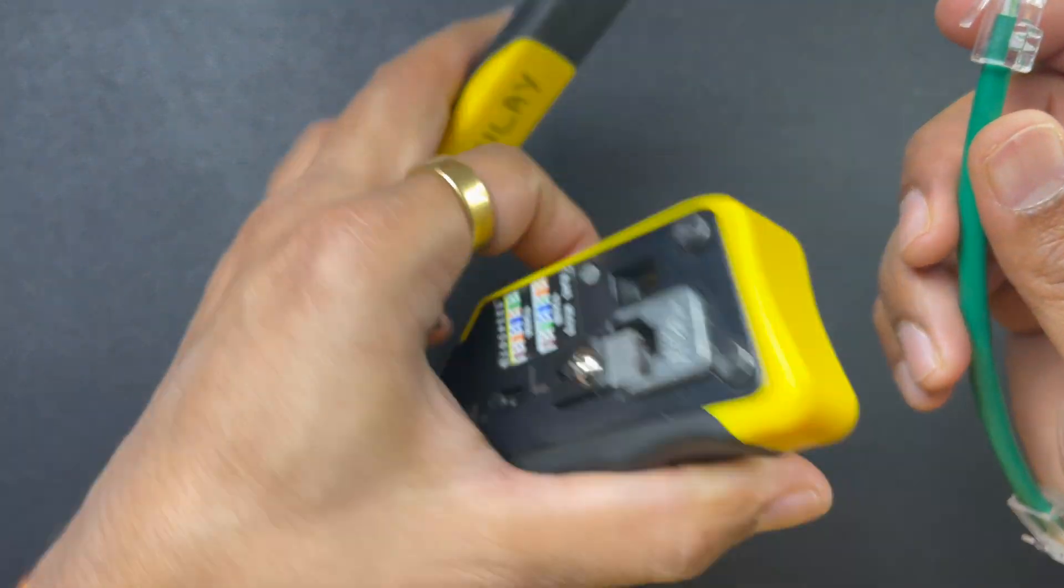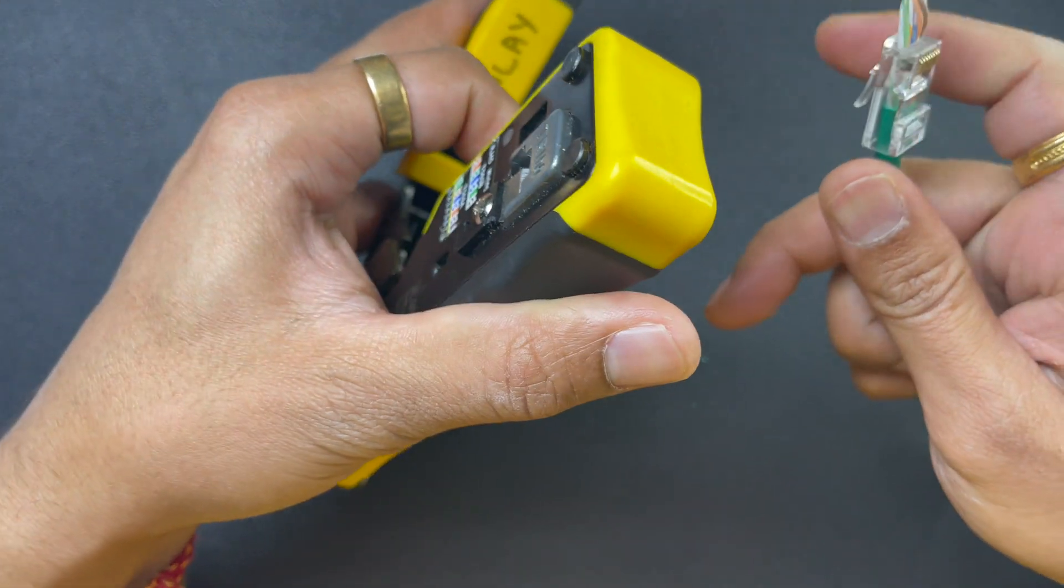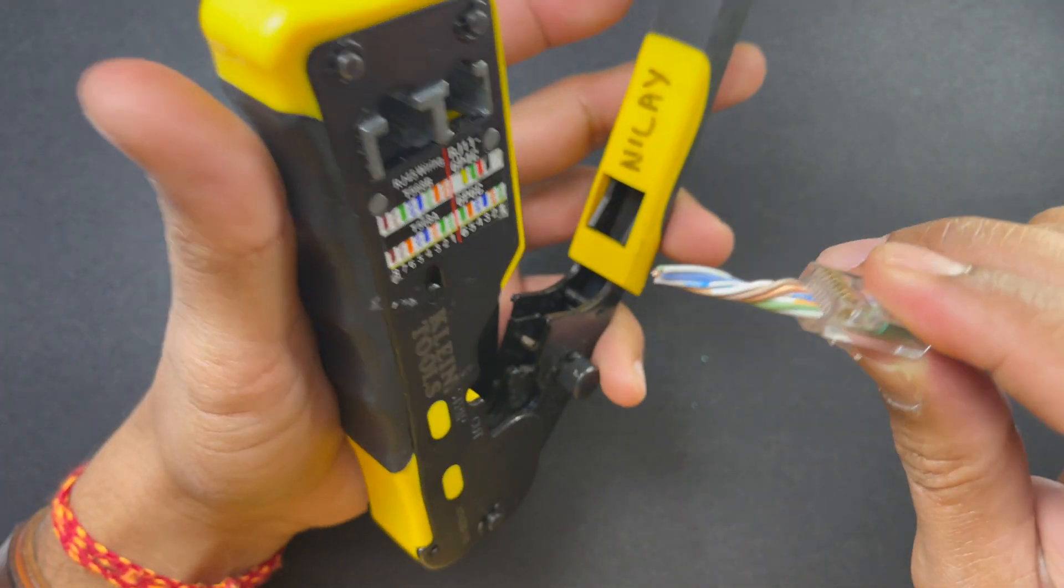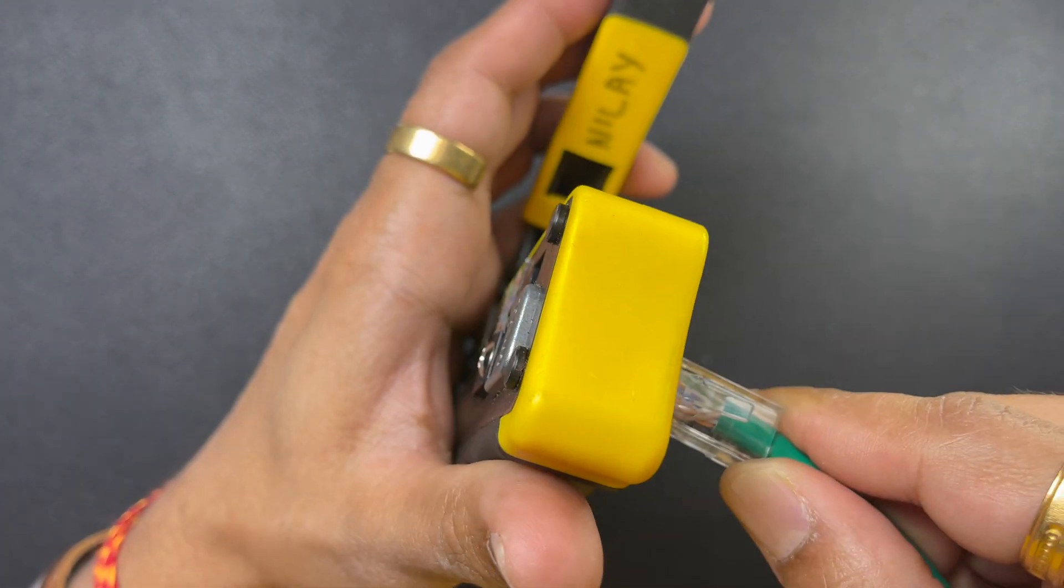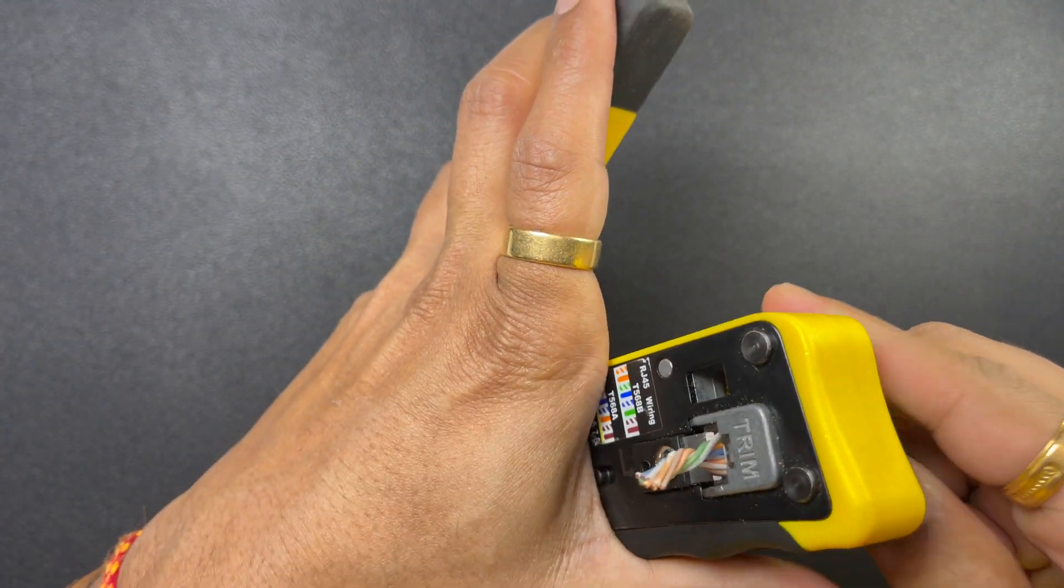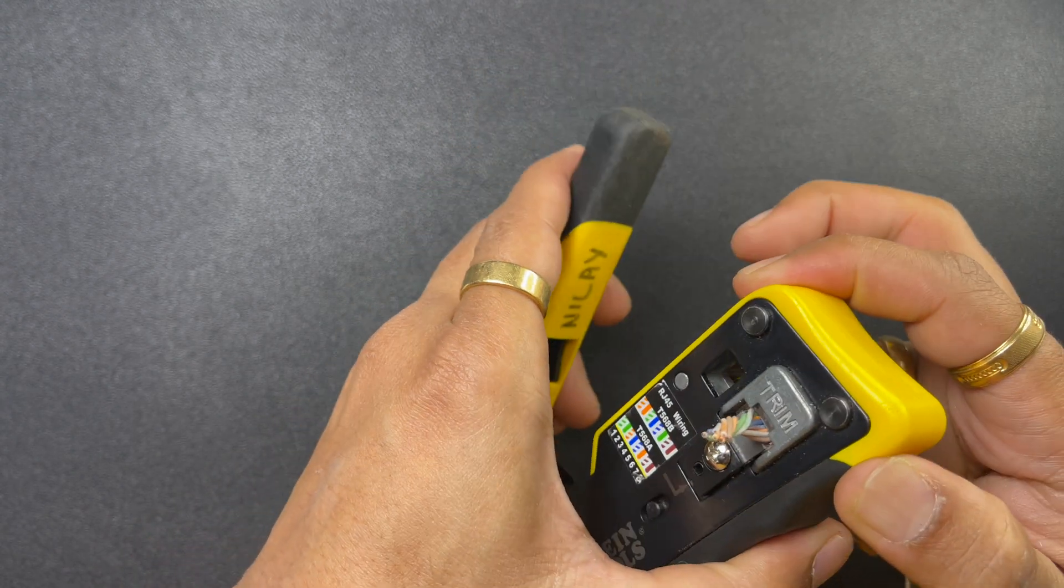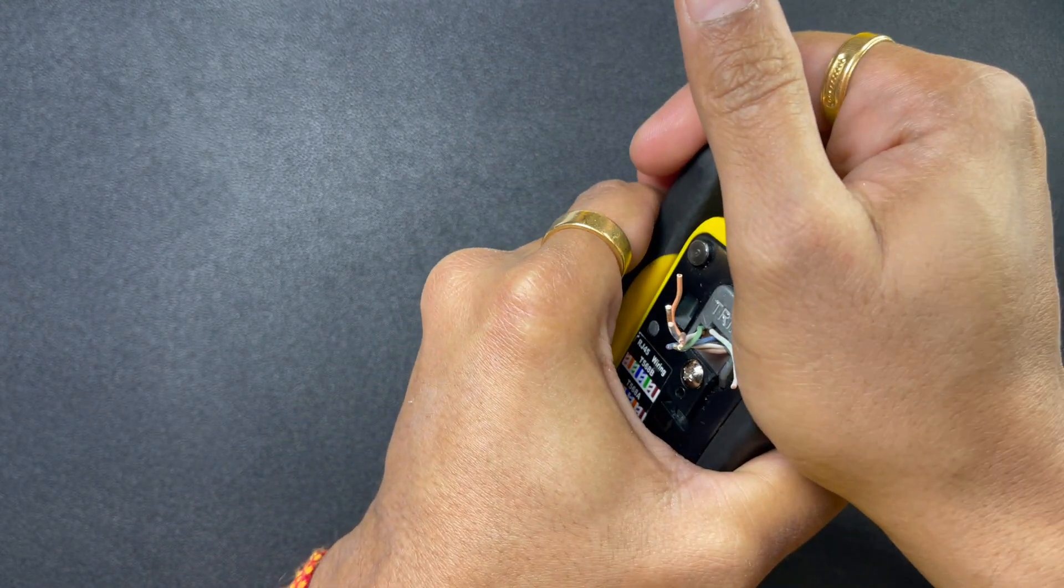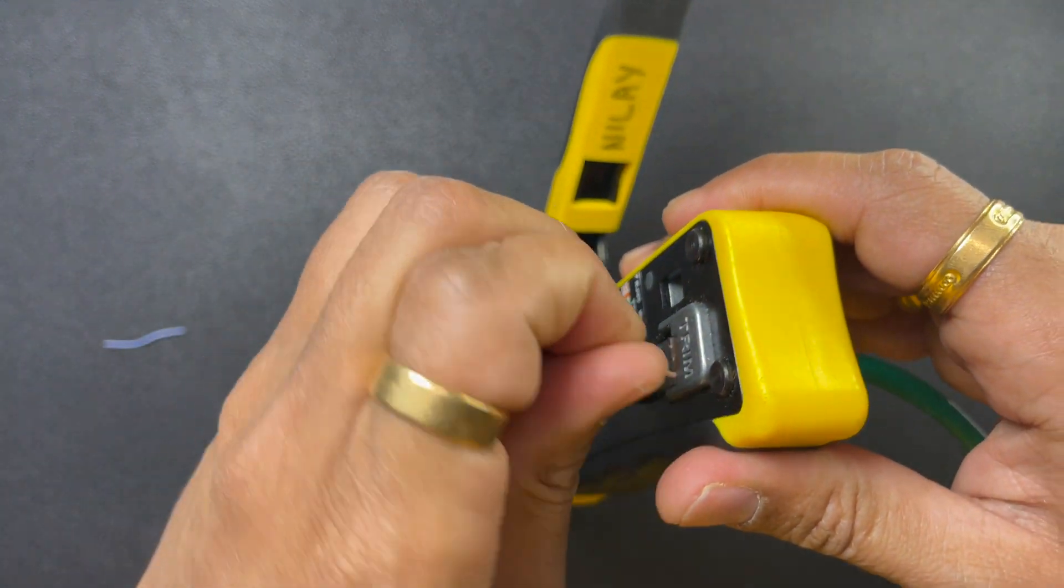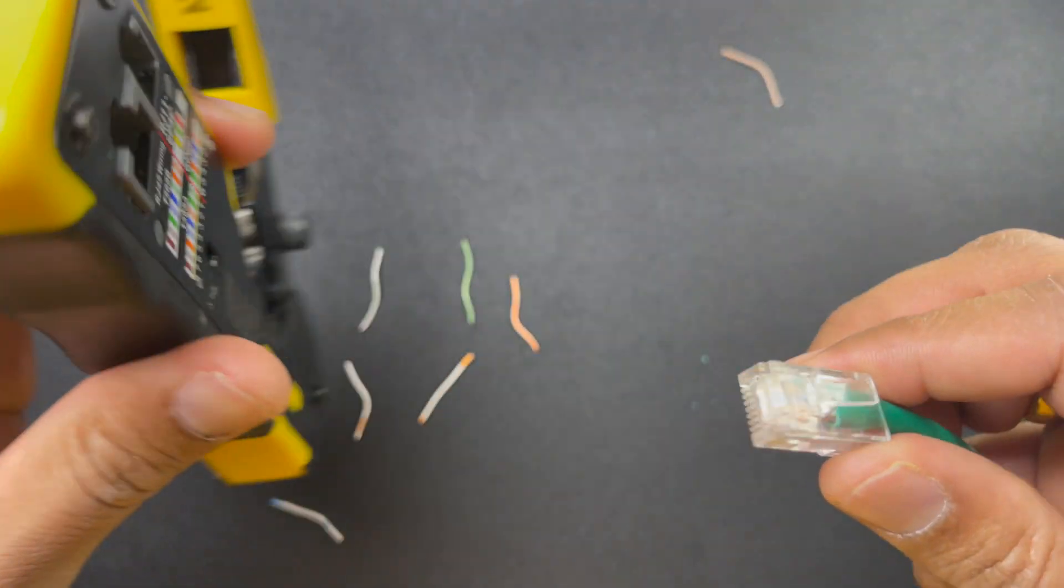We have our crimper here. We have this blade which is going to cut the cables. Make sure it's all the way through, and that's it.